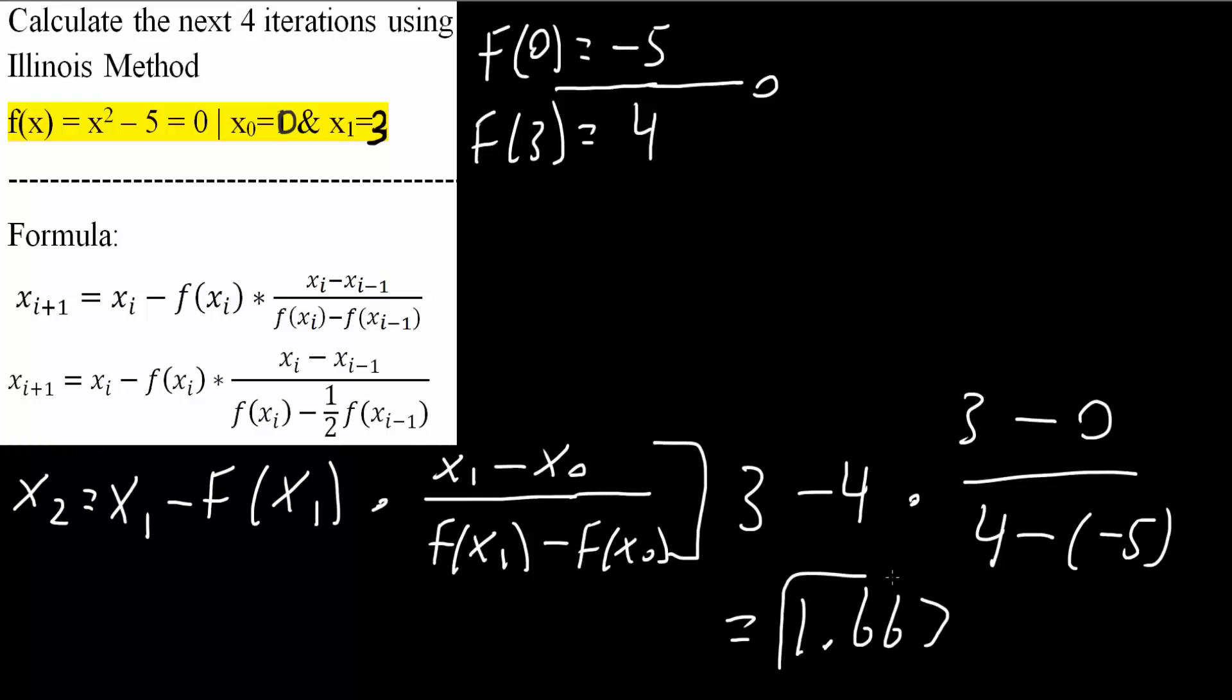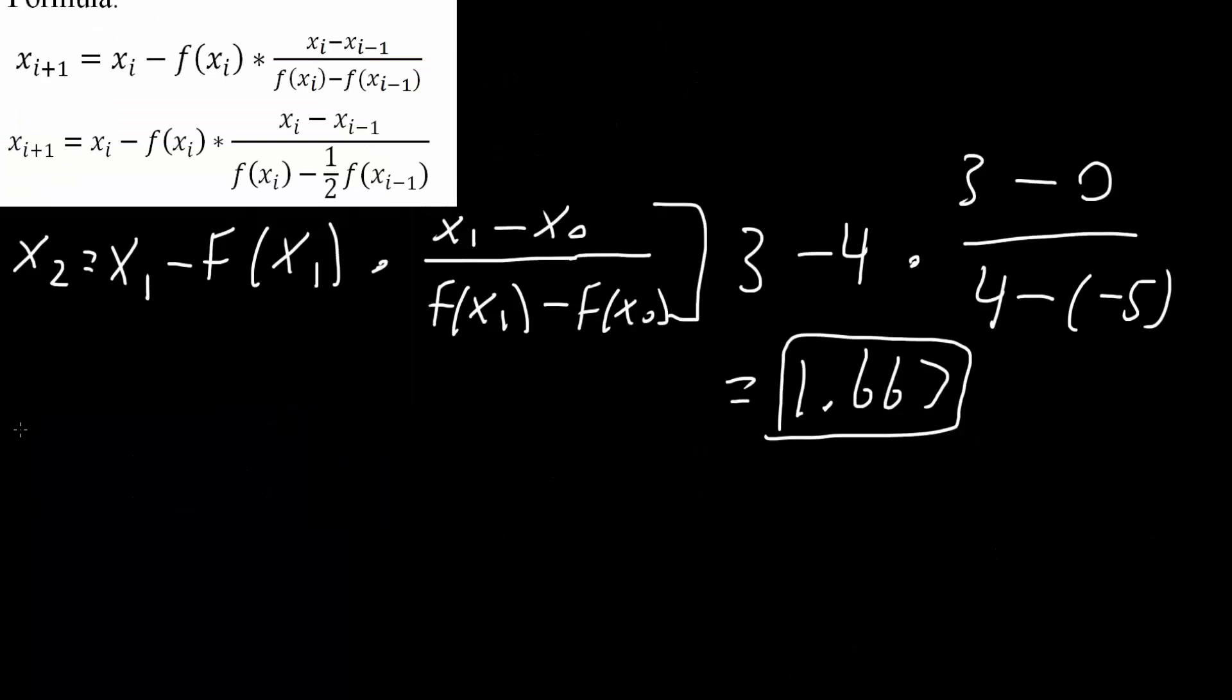This is the first iteration. And now we need to know what is f(x2), the function f(x2). So I will plug this number back into the function, meaning 1.667 squared minus 5, and we would get negative 2.222.